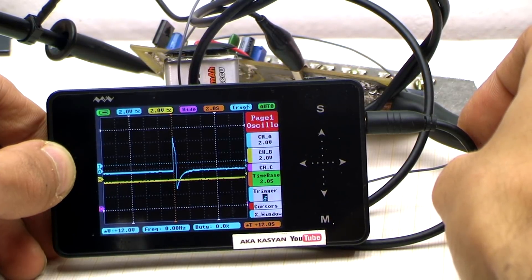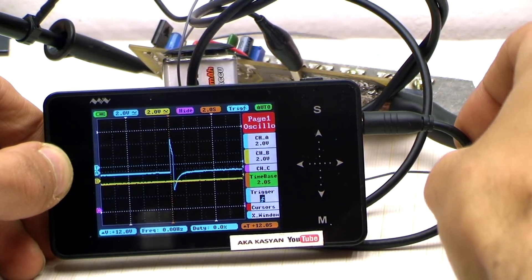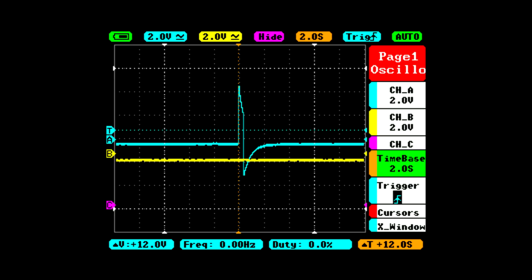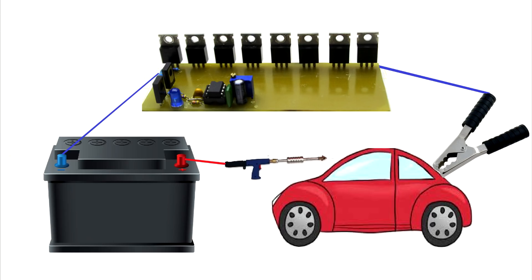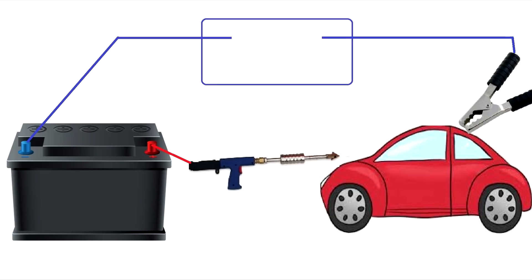For this we use the oscilloscope. When you press the button you see the peaks. They are the moments when the FETs are triggered. In other words this whole circuit is nothing more than a controlled timer which simply short-circuits the battery to the welding point for a short time.